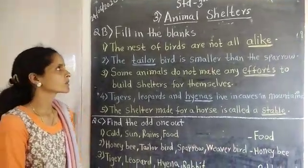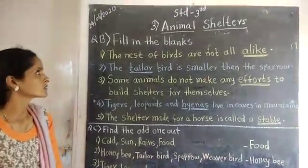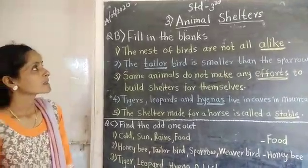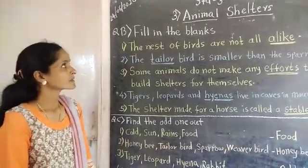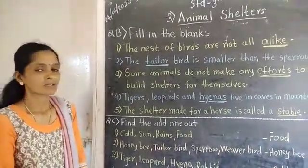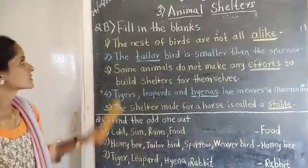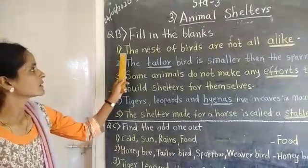Good morning children. Today we are going to see fill in the blanks. Standard third, lesson: animal shelter. Now, first fill in the blanks.